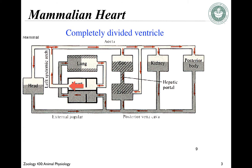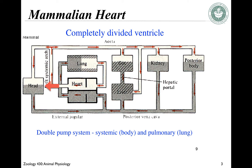In the mammalian heart we have a completely divided ventricle for a double chamber system — it's a double pump system. It separates the systemic circulation, which goes to the head and the rest of the body. As blood passes through the organs it meets resistance and pressure is reduced, but then it comes back to the heart and gets sent to the lungs for the pulmonary circulation. There are two circulatory systems running simultaneously, and oxygenated blood goes back to the heart to start all over again. This importantly allows for a high-pressure system to most organs and a slightly lower pressure system going to the lungs.